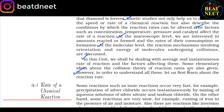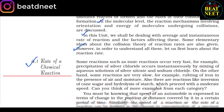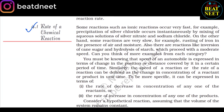Let us first learn about the reaction rate. 4.1 Rate of a Chemical Reaction. Some reactions such as ionic reactions occur very fast. For example, precipitation of silver chloride occurs instantaneously by mixing aqueous solutions of silver nitrate and sodium chloride. On the other hand, some reactions are very slow — for example, rusting of iron in the presence of air and moisture. Also, there are reactions like conversion of cane sugar and hydrolysis of starch which proceed with a moderate speed.